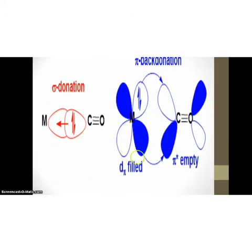In metal carbonyl bond, there are two types of characters shown. One is sigma character and another one is pi character. This is sigma character and this is pi character.